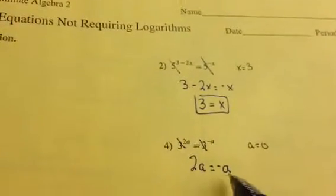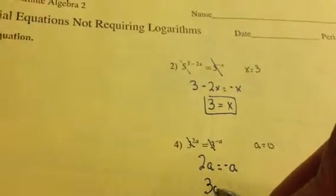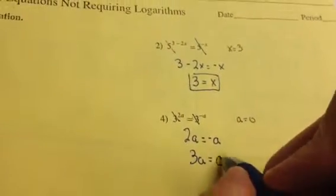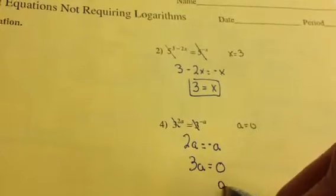So I need to get a by itself. So I'm going to add an a to this side and that gives me 3a. And that leaves me with 0 over here. And now to solve for a, I would just divide by 3 and that's how I get my answer of a being 0.